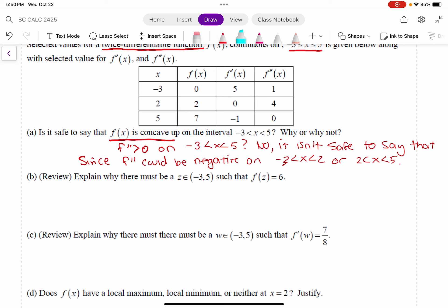Well, f of negative 3, let's write this, f of negative 3 is equal to 0 and f of 5 is equal to 7. Okay, and so are we looking at a continuous function?